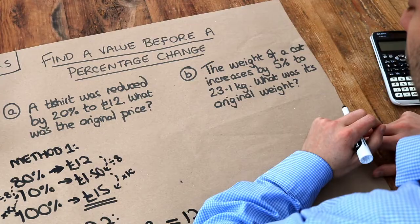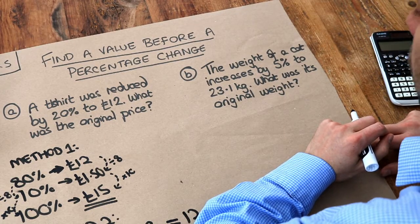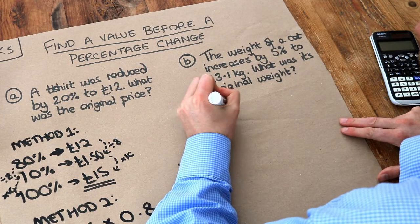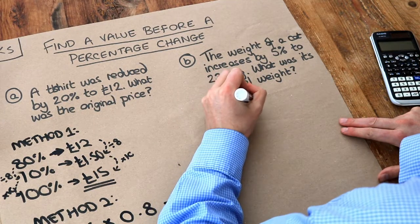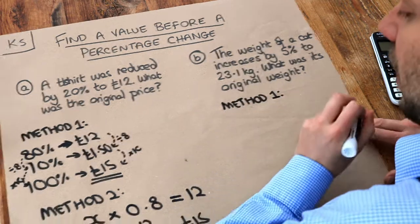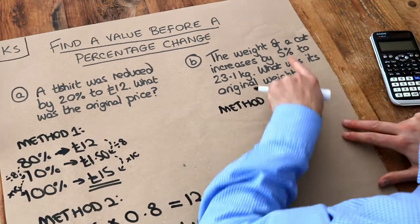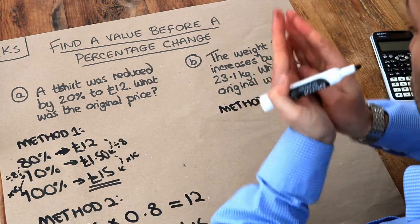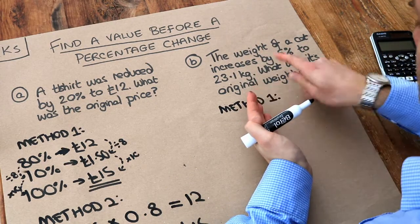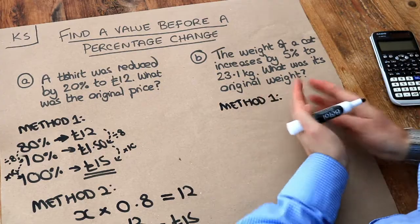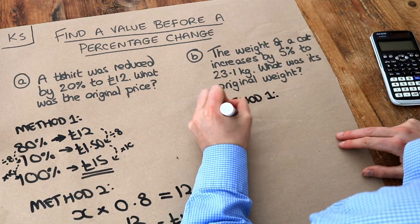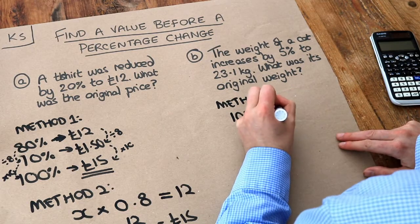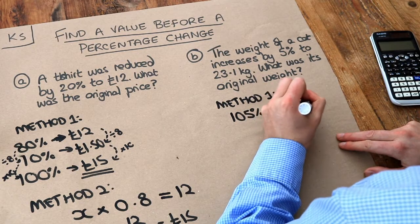The weight of a cat increases by 5% to 23.1. What was its original weight? So let's do both methods again. Method one is to say, well, what percentage are we at now? So if the weight increases by 5%, well, it was originally at 100. Remember, always start at 100%. It goes up by 5%. We're now at 105%. So 105% of the cat's weight was 23.1 kilograms.